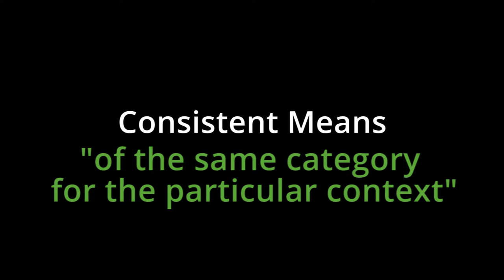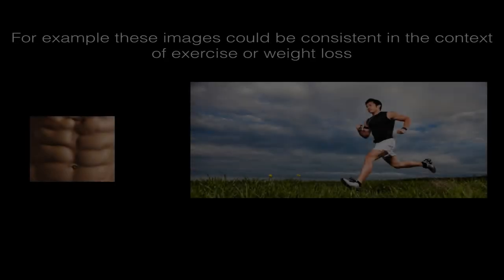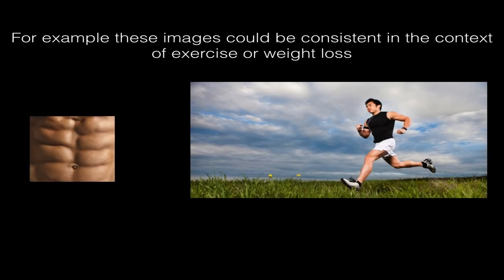Have a look at an example of a native ad. In this example of images, you can see that the image on the left is clearly very different from the image on the right. But they could be of the same category in the context of exercise or weight loss. In fact, the image on the left is probably a good one to use because at first glance it's difficult to know exactly what it is. Then you might read a headline like 'Five exercises they never told you about to lose weight,' and then you go to the article and see that image at the top. This would be an example of consistent.